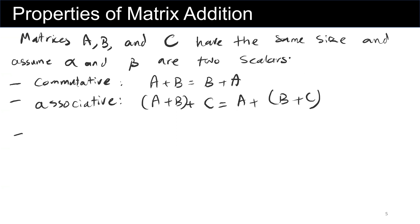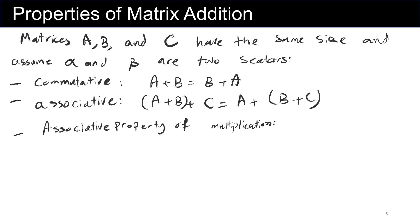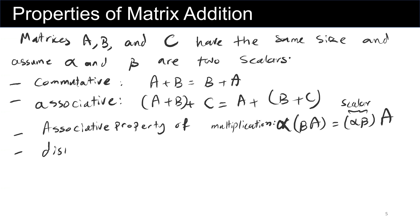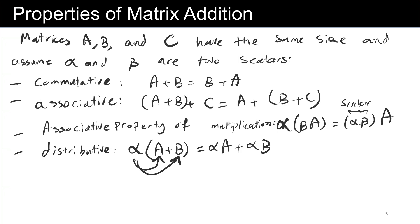The third one is the associative property of scalar multiplication. When we multiply a matrix by a scalar, the associative rule can be applied. The next property is the distributive property: alpha, which is a scalar, multiplied by (A plus B) is equal to alpha A plus alpha B — so alpha is distributed to each component.